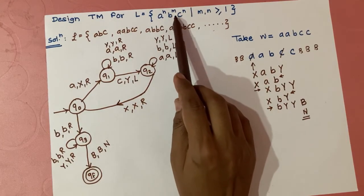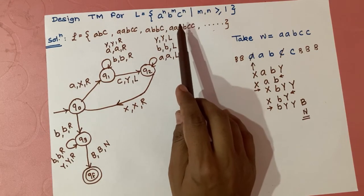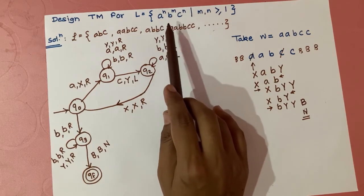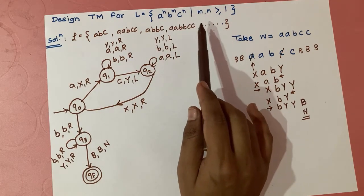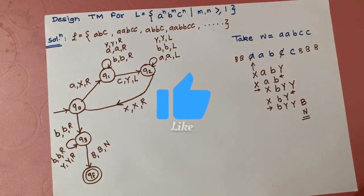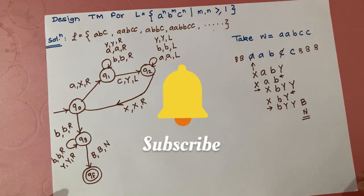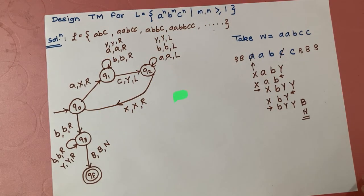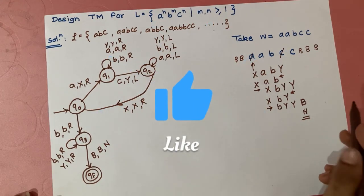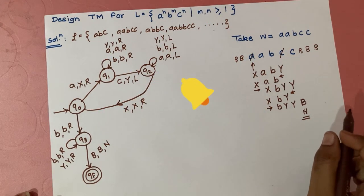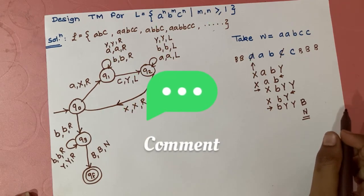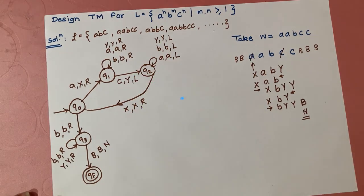This is the complete Turing machine diagram for the language a^n b^m c^n. We don't need to count the number of b's — they are simply passed through. If you have any queries or similar languages for which you'd like a Turing machine, please comment. If you liked the video, please share and subscribe to the channel. Thank you very much.